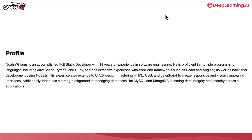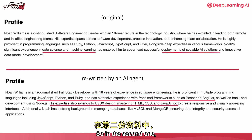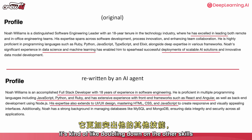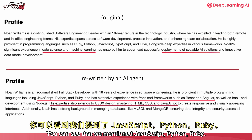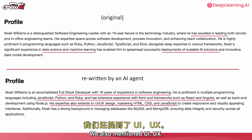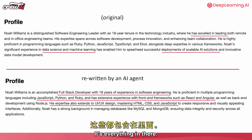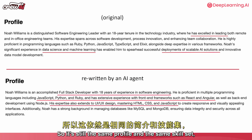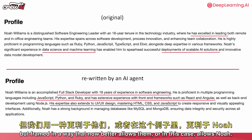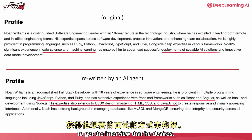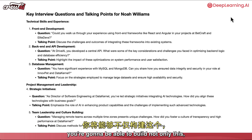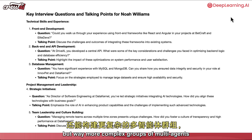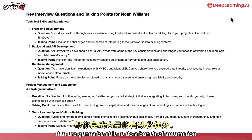This is what the new profile looks like. In the first version, it was highlighting a lot of his leadership experience. But in the second one, it doubles down on the skills that better match the job he's applying to — JavaScript, Python, Ruby, UI/UX, HTML, and CSS. It's still the same profile and skill set, but framed in a way that now better allows Noah to get the interview he desires. By the end of this course, you'll be able to build not only this, but way more complex groups of multi-agents that can do a bunch of automation for you.